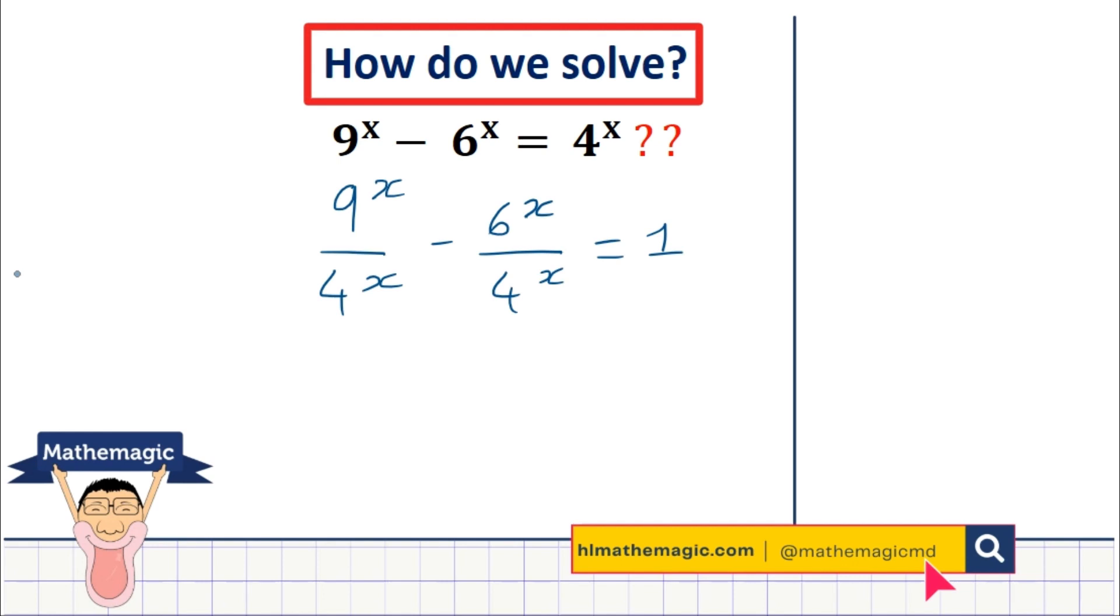This is going to allow us to follow the first rule of algebra. When you have a to the power n divided by b to the power n, you're allowed to combine these and say that this is a over b to the power n. And so we can use this here and say that this is 9 over 4 to the power x minus 6 over 4 to the power x equal 1.